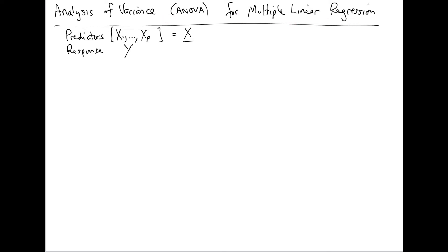So let's recall our model. We have p predictors, x1 through xp, which we might just lump into a vector x to make the notation a little bit easier. We have response variable y, and then we have n observations for the predictor vector and for the response variable.